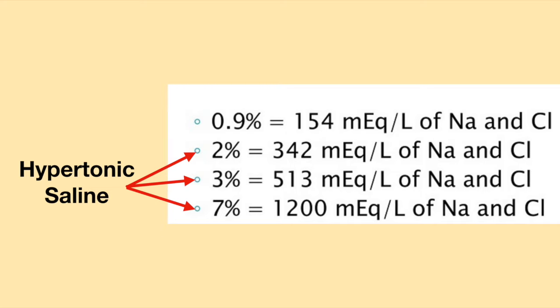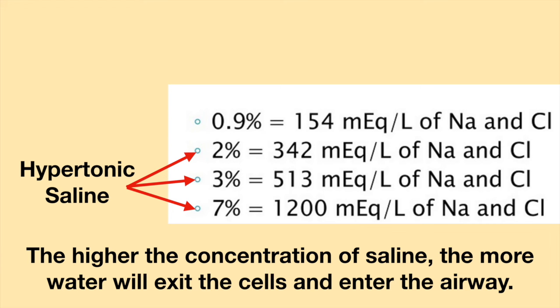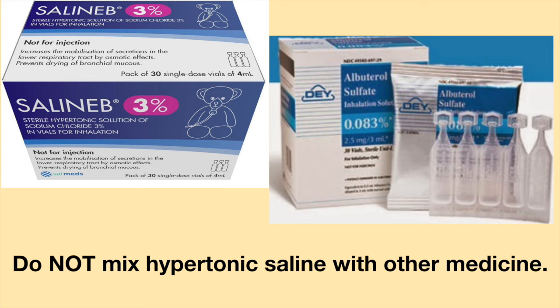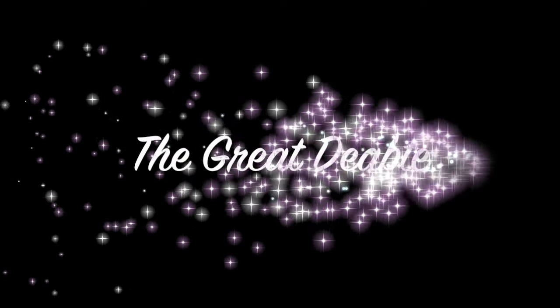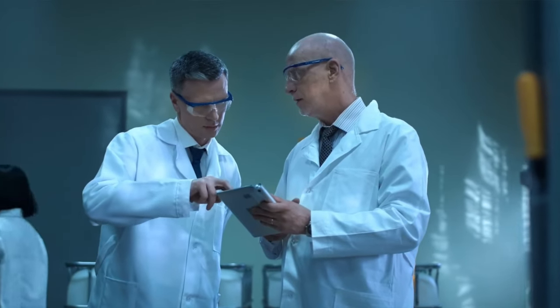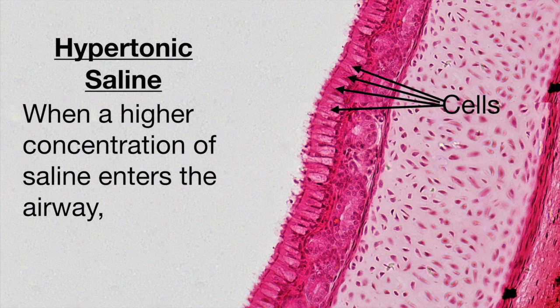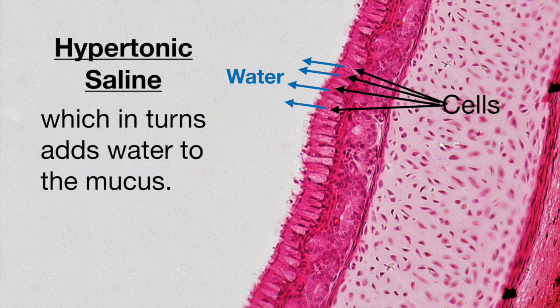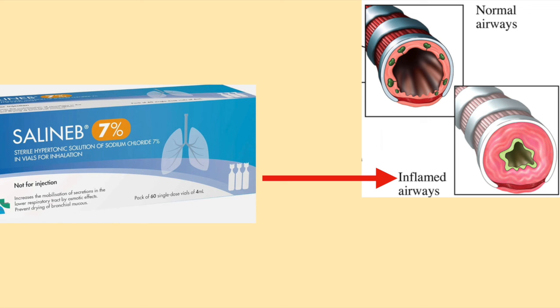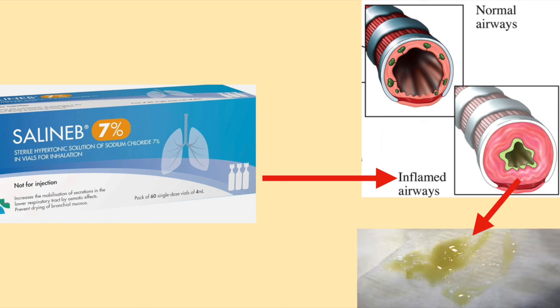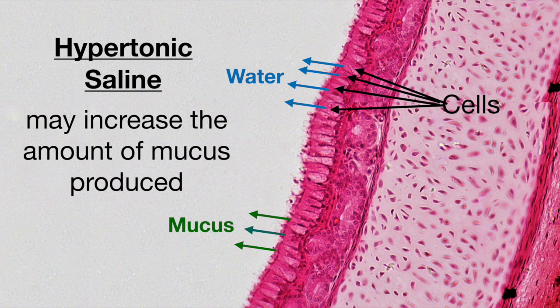This will make it easier for a person to clear secretions via coughing or suctioning if they have a tracheostomy tube. There are a number of different hypertonic saline concentrations — the higher the concentration, the more water will exit the cells and enter the airway. In general, it is advised to not mix hypertonic saline with other medicines. However, there is a lot of debate on how well hypertonic saline works, because hypertonic solutions of sodium chloride cause irritation to the airways, which may cause the airways to produce more mucus — creating a conundrum where the added water may be offset by increased mucus production.